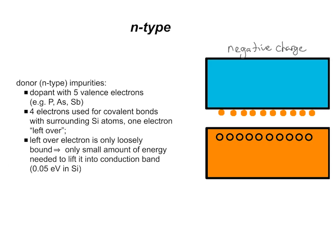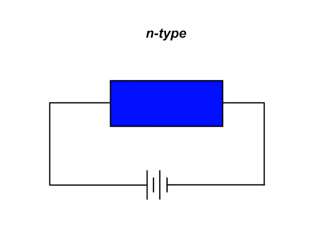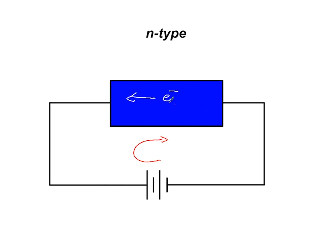So what happens in conduction? If we apply a potential difference or electric field, we have electrons moving in the conduction band. Electrons always move towards the positive plate, so they migrate in that direction. Conventional current, of course, flows from the positive plate to the negative plate — the opposite direction. So in an n-type semiconductor, electrons migrate in the opposite direction to the conventional current, as we would expect.